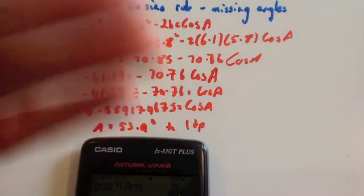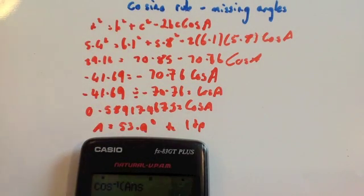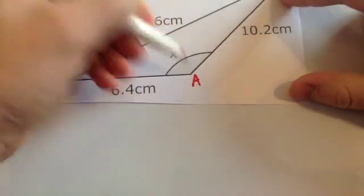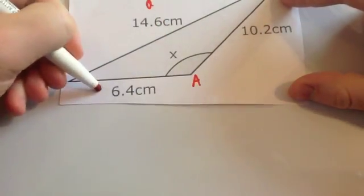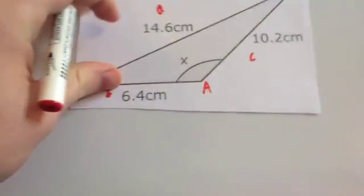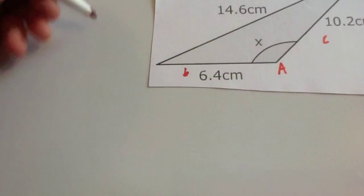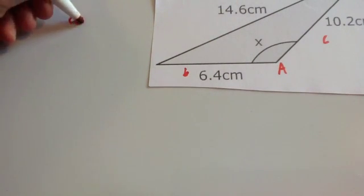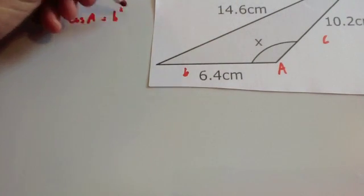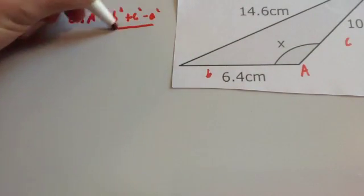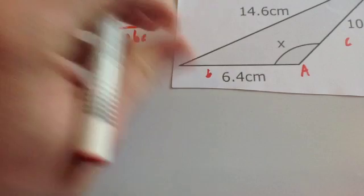You can substitute it in and rearrange the numbers. Alternatively you can use the rearranged formula. Let's find angle x here. Let's label the sides: that's going to be A, that'll be little a, and b and c will be the other two sides. The rearranged cosine rule formula was cos A = (b² + c² - a²) / 2bc.